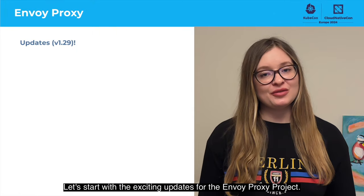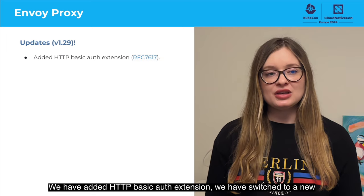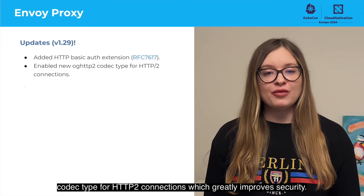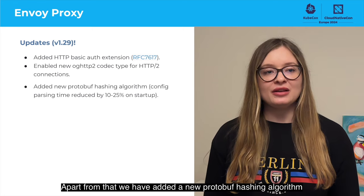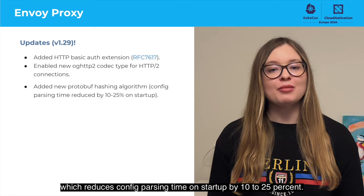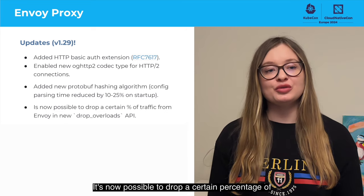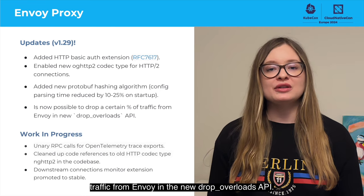Hello, this is Katerina from the Envoy Proxy Project, and today we're going to present updates from the Envoy Proxy and its fellow projects, Envoy Mobile and Envoy Gateway. We have added HTTP basic auth extension. We have switched to a new codec type for H2 connections, which greatly improves security. We have added a new protobuf hashing extension, which reduces config parsing time on startup by 10 to 25%. It's now possible to drop a certain percentage of traffic from Envoy in the new Drop Overloads API.